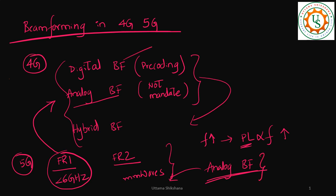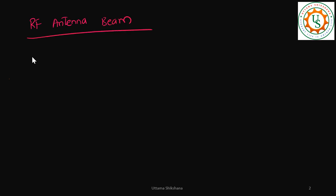In 5G, especially in millimeter waves, analog beamforming is exercised. We will explore a lot of concepts related to analog beamforming, digital beamforming, and even hybrid beamforming. I hope you got the high-level picture of why we want to talk about beamforming. Now, when we say beamforming, we are talking about an RF antenna beam. Let's say I have just one antenna — this antenna has got some beam.